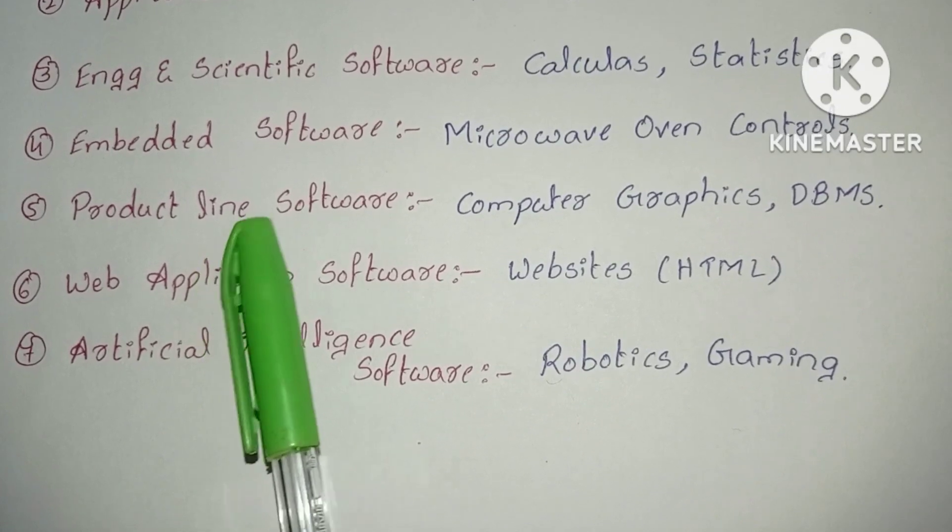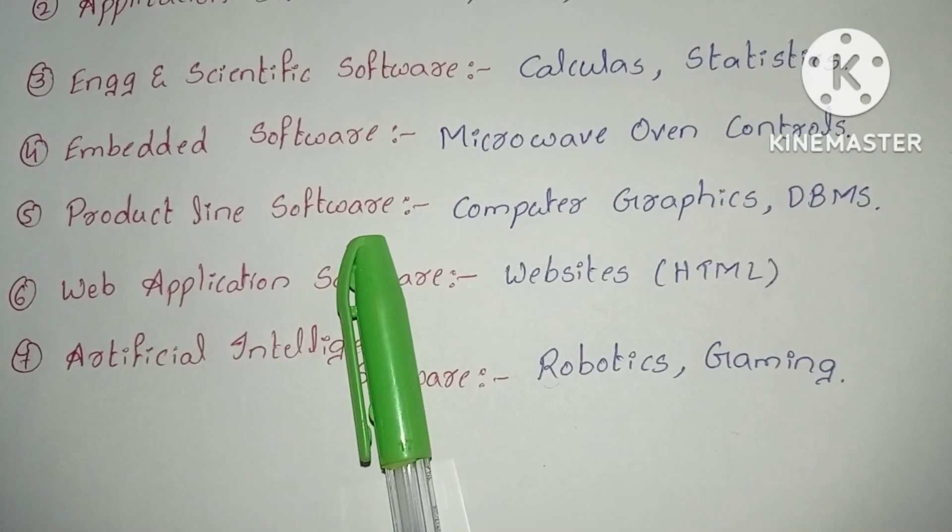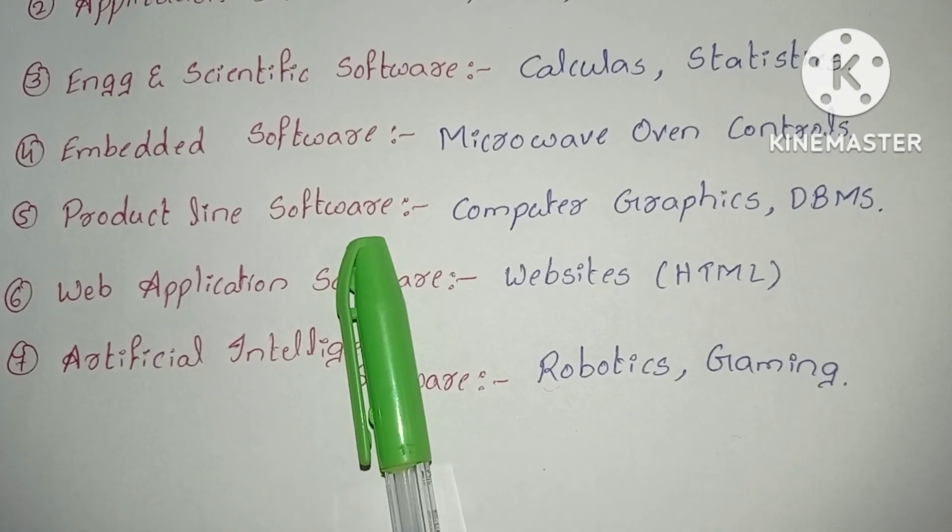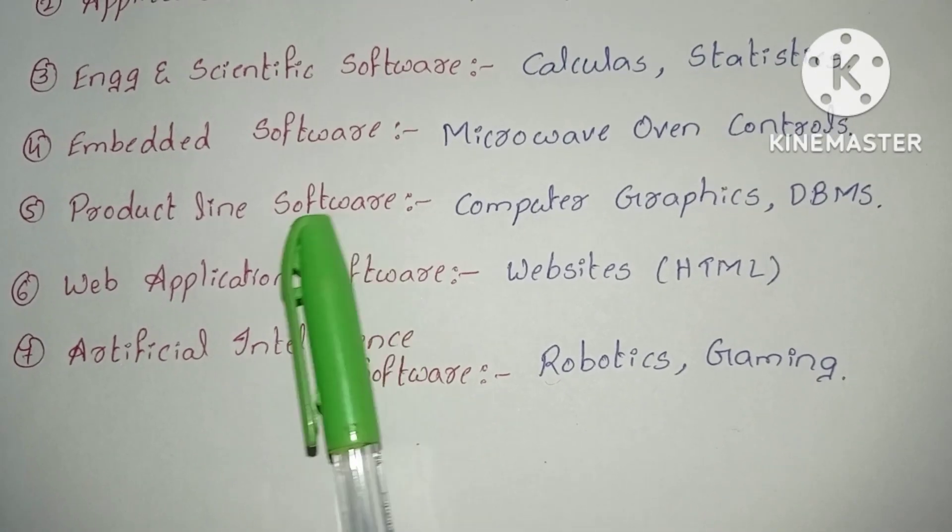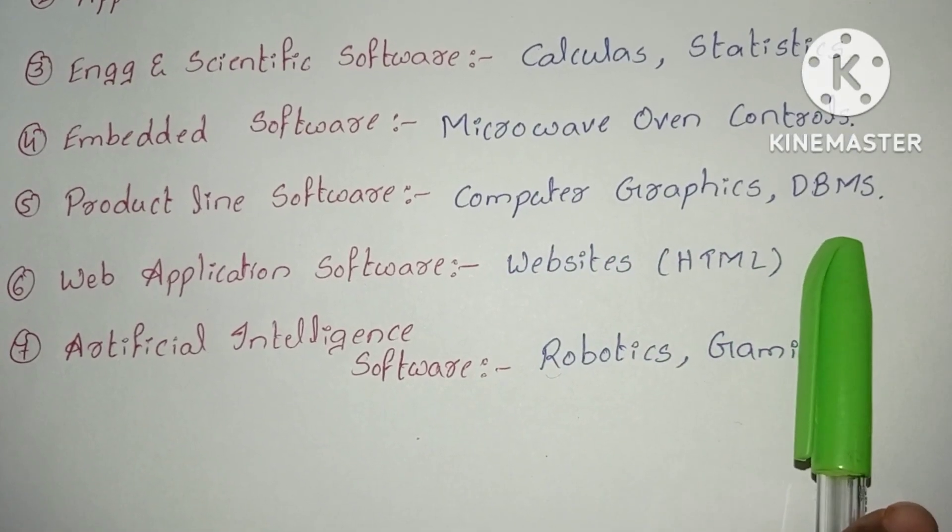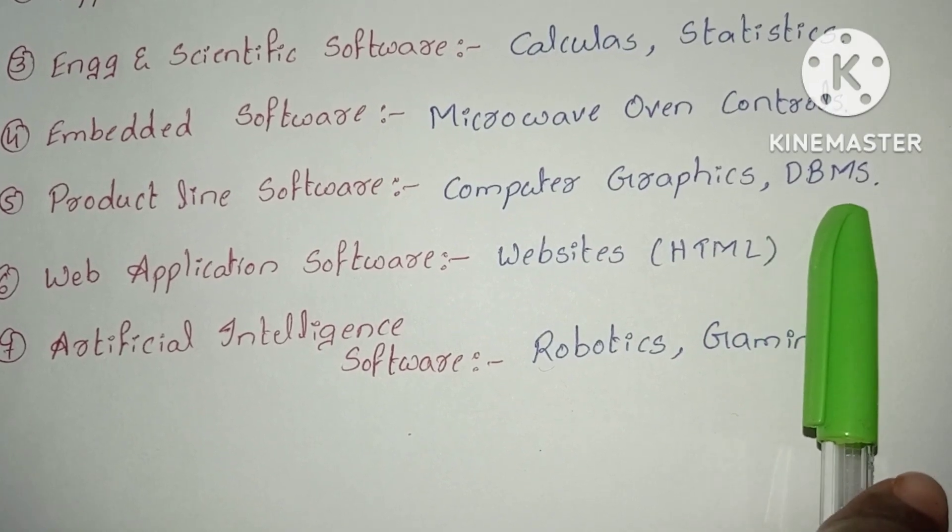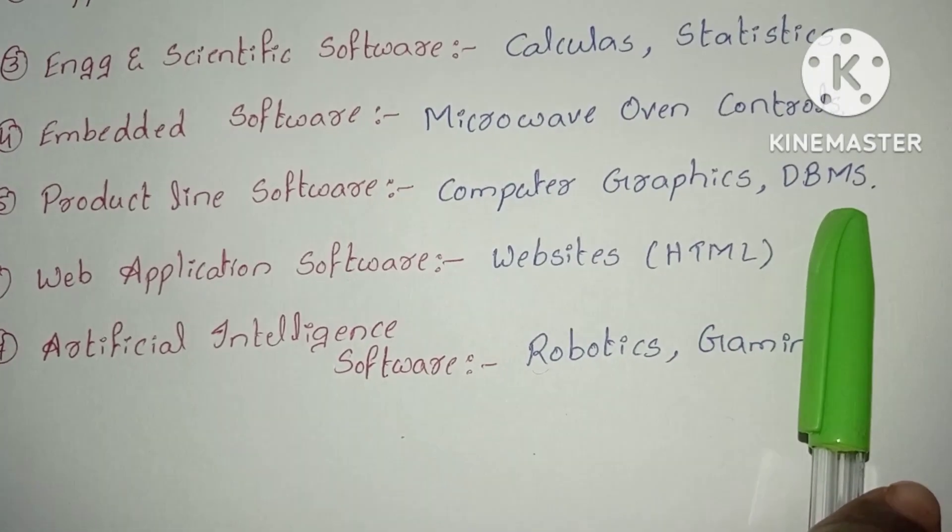Fifth is product line software. Product line software provides specific capabilities for software engineering. Best examples are computer graphics and DBMS. DBMS is database management system. We can create databases to store large amounts of data.